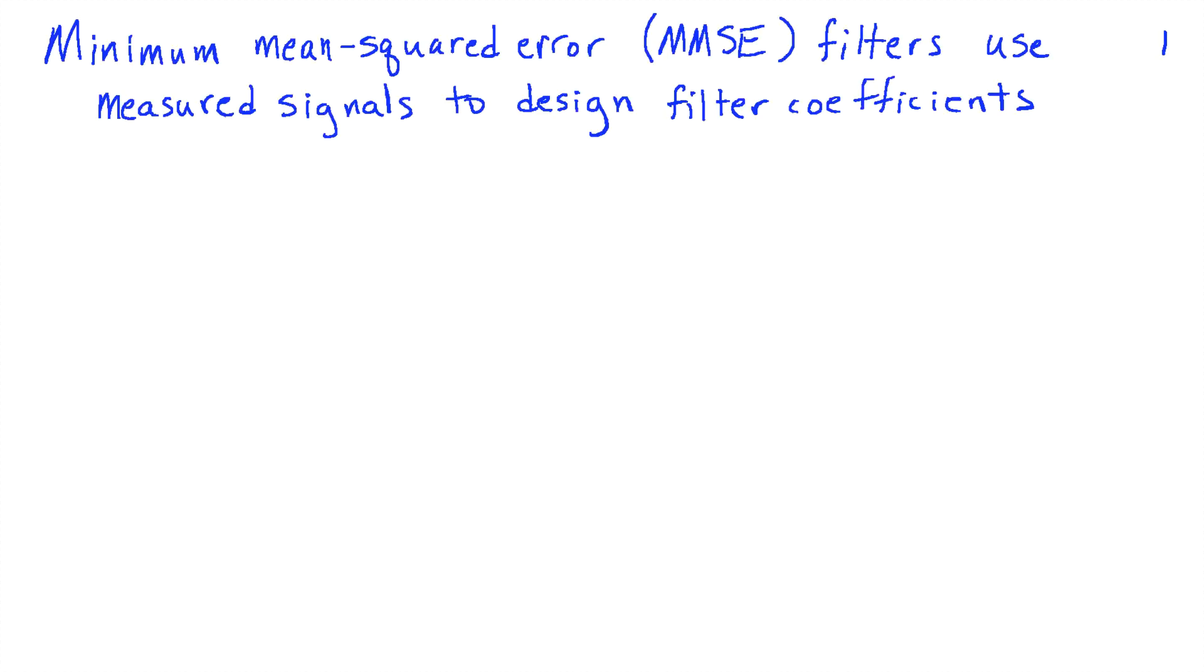The idea is that a minimum mean squared error filter uses the signals that are available to come up with an optimal set of filter coefficients. And those filter coefficients are the ones that minimize the mean squared error.